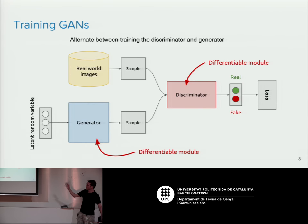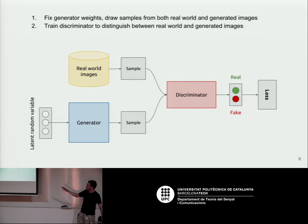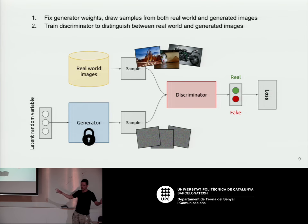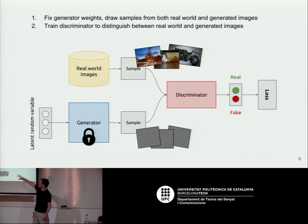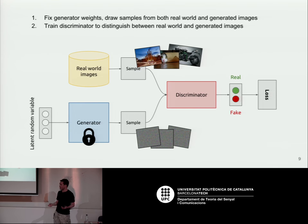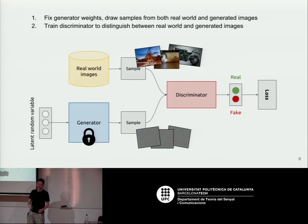To train them, you alternate between training the generator and discriminator. First, fix the generator's weights and draw samples from both the real world and the generator. At the start, the generator produces pretty bad samples — really just mapping noise to noise — while you pull a batch of real world images and feed both into the discriminator. You train the discriminator for a few iterations until it learns to distinguish them. At the start it's not too difficult — real images tend to have strong, longer edges that random noise doesn't.